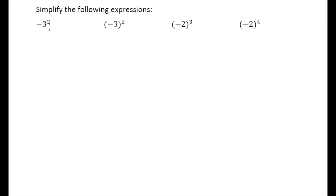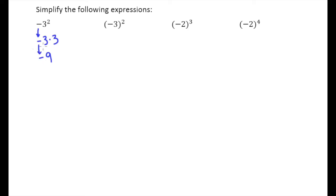In this first one, I'm squaring the 3 and then I have a negative in front. Remember what squaring means — it literally means take the number you're squaring times itself. That negative out here has nothing to do with the exponent of 2. The second power is only applying to the thing immediately to its left, so that negative is just coming along for the ride. 3 times 3 is 9, and the negative comes along, so negative 3 squared gives us negative 9.